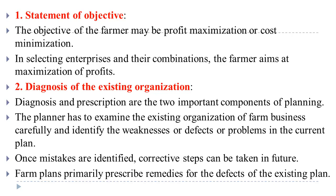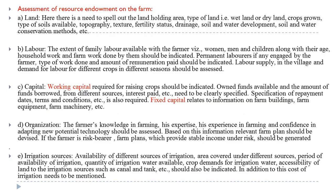Once mistakes are identified, corrective steps can be taken. Farm planning primarily prescribes remedies for the defects of the existing plan. Step 3 is the assessment of resource endowments on the farm — meaning the availability of resources.